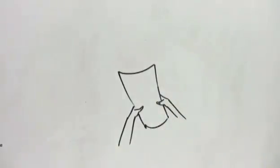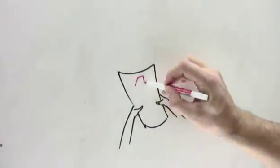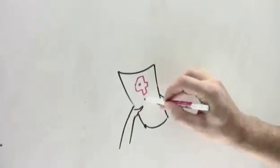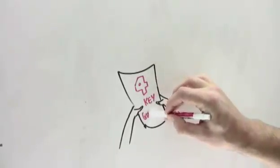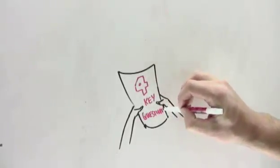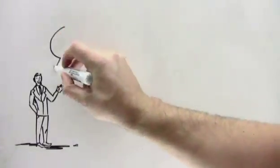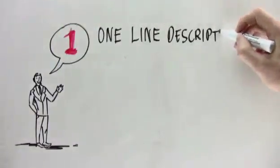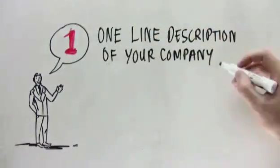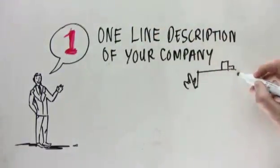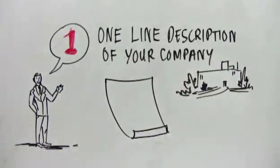So, get a pen and paper if you don't already have one, because in the next few minutes, you're going to learn four of the key questions and information that you absolutely must include in your business plan. So, the first thing you must include in your business plan is a one-line description of your company. Not a paragraph, not two lines, but one line that clearly summarizes what your company does.